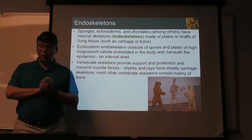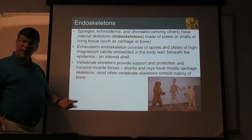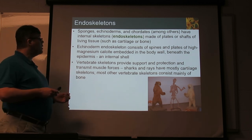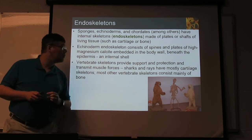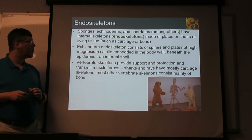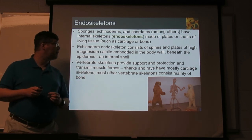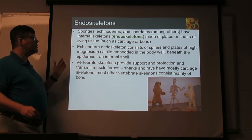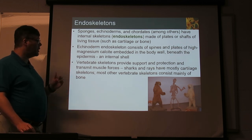Endoskeletons — of course, we have those. We are chordates. The echinoderms, things like starfish and sea urchins, have internal skeletons. Sponges and sharks have internal skeletons. Squid — there are a variety of things there. Different styles. These may be separate plates or more attached together.